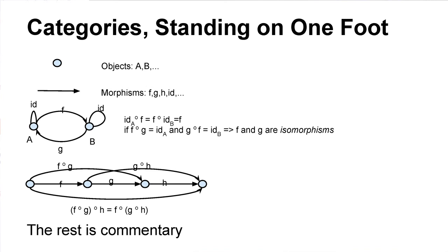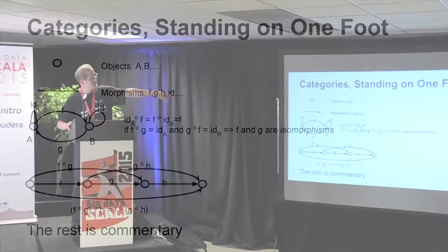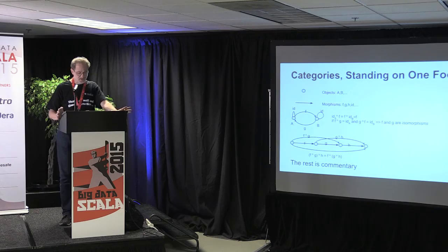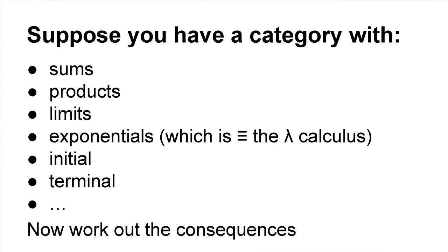The identity morphisms give you this law: taking the identity morphism on A and then following F is identical, up to isomorphism — which we hear all the time — to taking F and then the identity morphism on B. So on one level I've told you everything. But what you always get when you start reading about this is someone says, what about sums, products, epimorphisms, monomorphisms, exponentials, initial objects, terminal objects, and on and on.